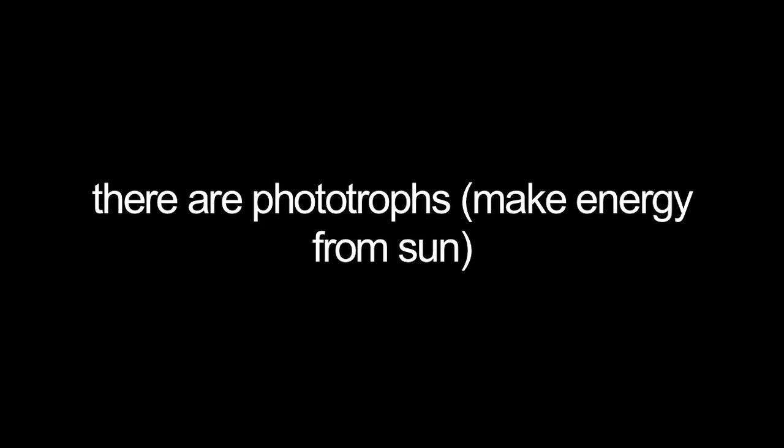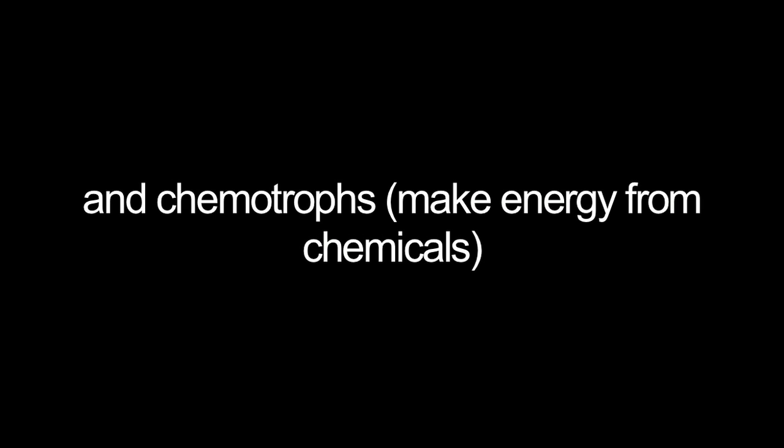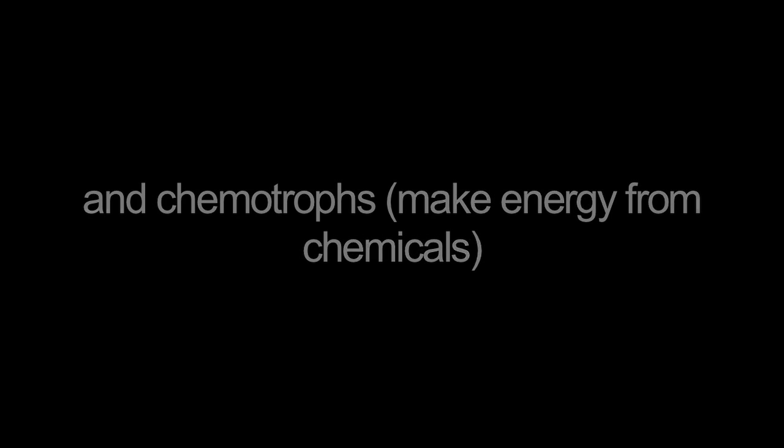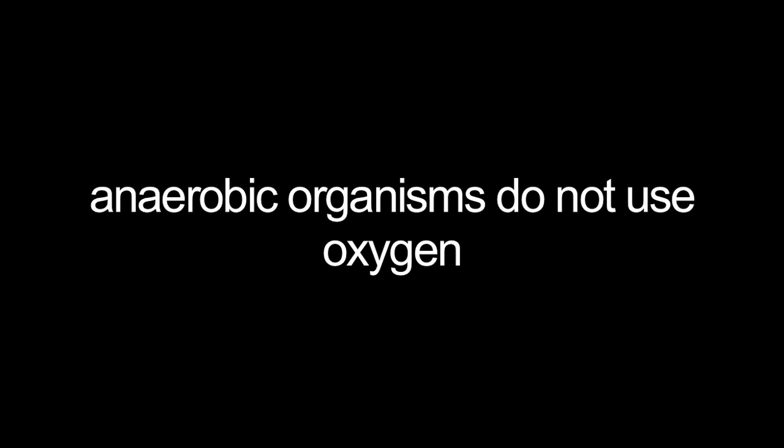Phototrophs make their energy from the sun. Chemotrophs make their energy from chemicals. There are also aerobic and anaerobic organisms. Aerobic organisms use oxygen, and anaerobic organisms do not use oxygen.